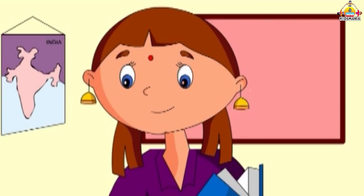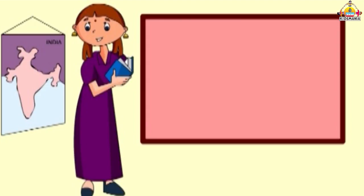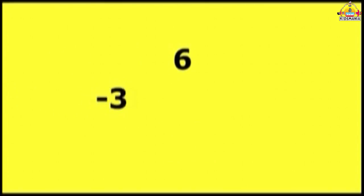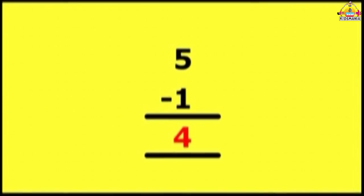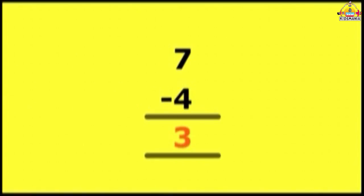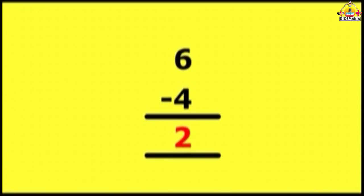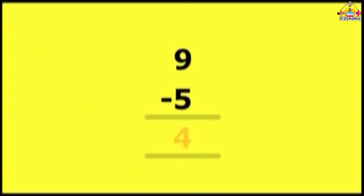Now, column method. Let's learn the subtraction by column method. Look at it. 3 minus 1: 2. 6 minus 3: 3. 5 minus 1: 4. 8 minus 4: 4. 7 minus 4: 3. 4 minus 3: 1. 9 minus 7: 2. 6 minus 4: 2. 7 minus 2: 5. 9 minus 5: 4.